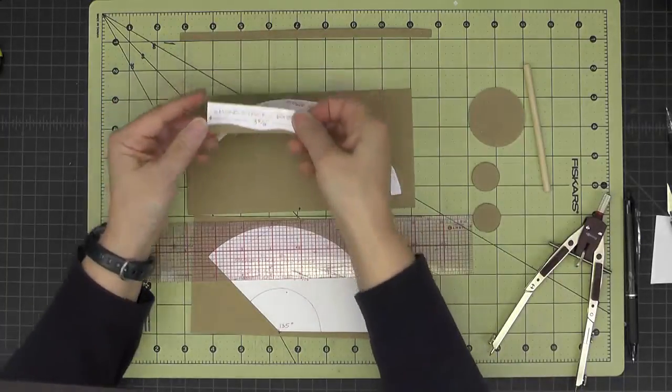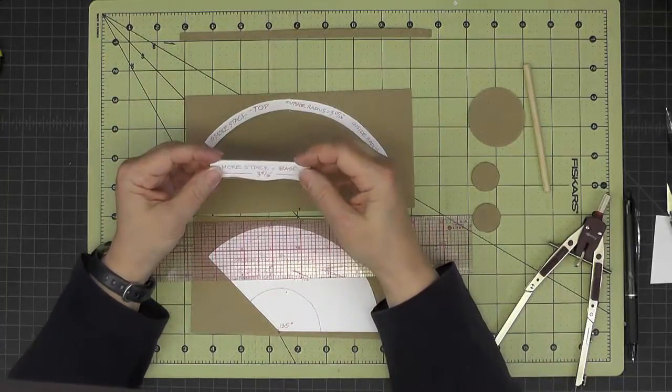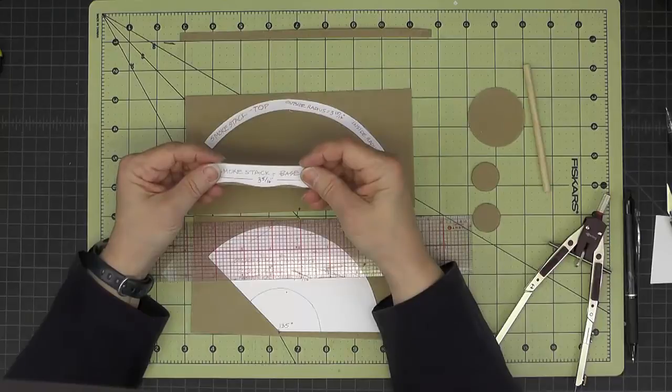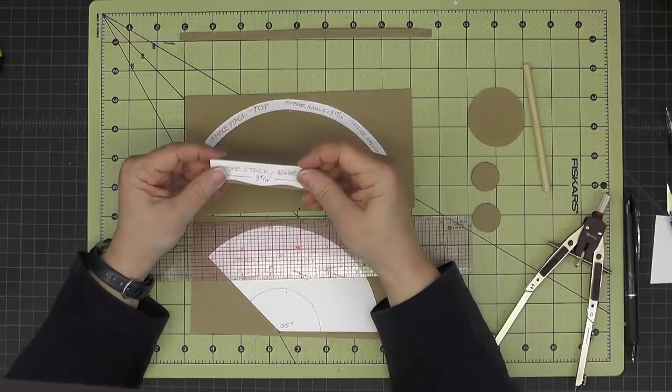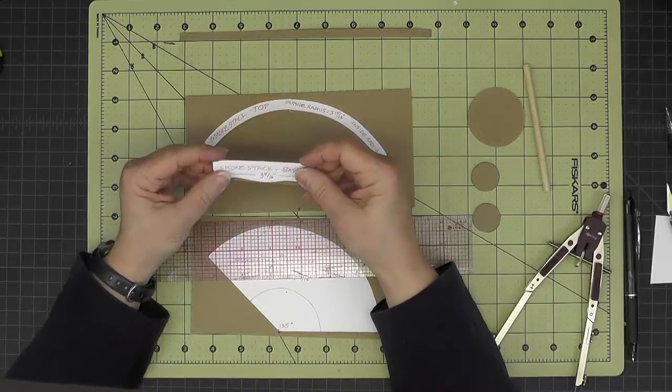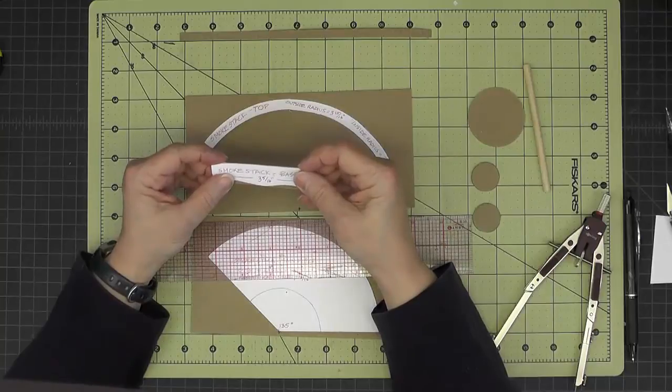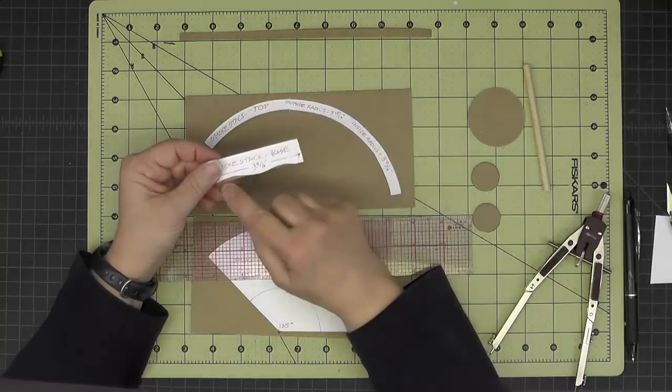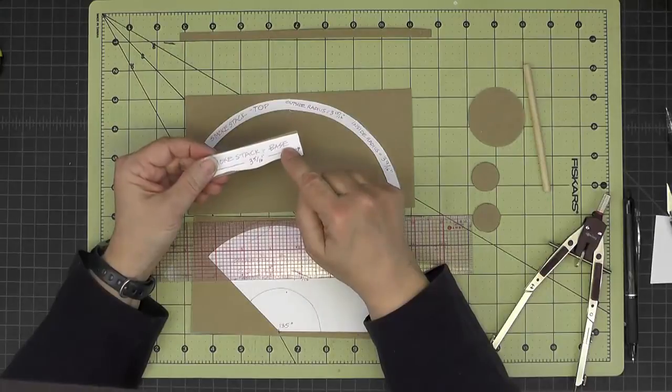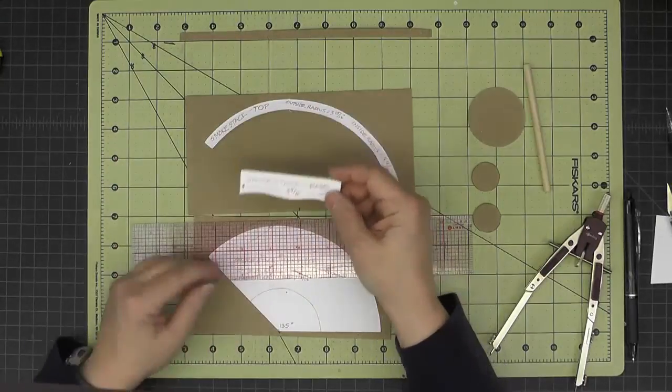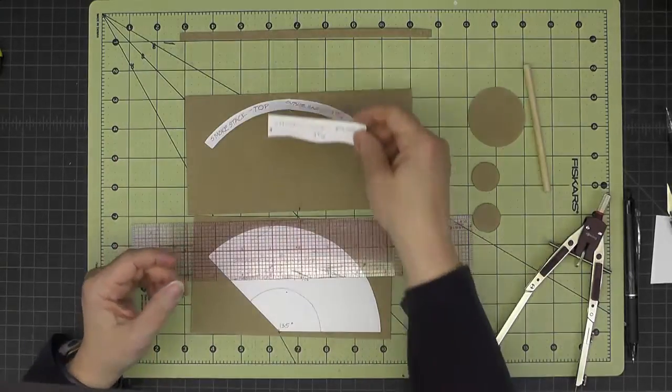And then for the base, it's similar to how we did the two domes, the steam dome and the sand dome. All we need to do is cut this little curve on the bottom. So I'll get my pieces cut out, and then I'll be back.